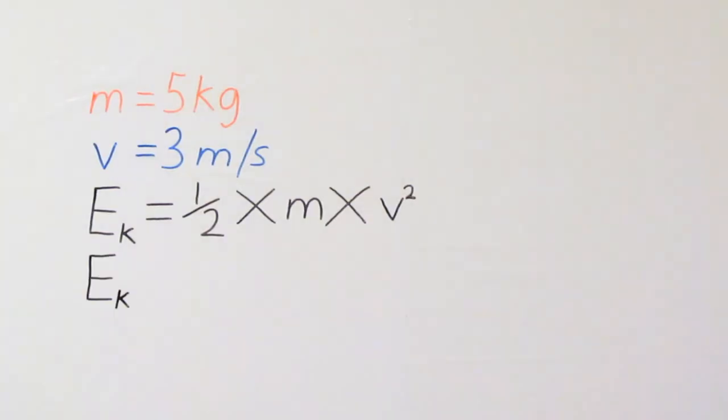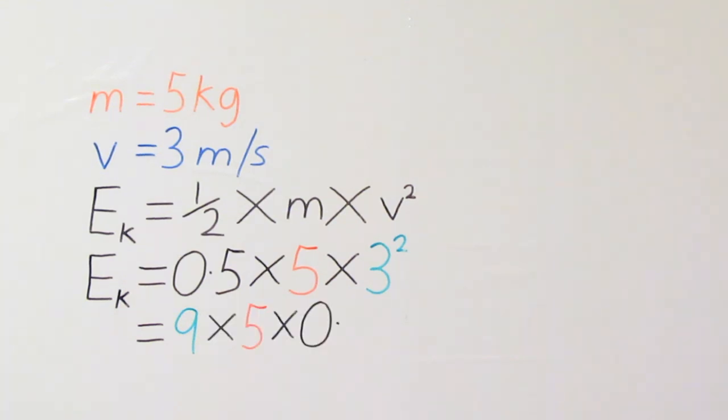For kinetic energy, you multiply a half, that's 0.5 when you type it into your calculator, by the mass and the square of the velocity. If I were you, I'd do this in reverse order. Square the velocity first, that way you don't accidentally square anything else. Then multiply that result by the mass, and then by 0.5.